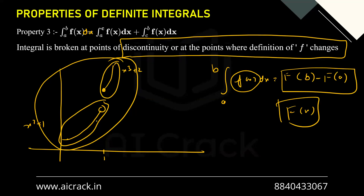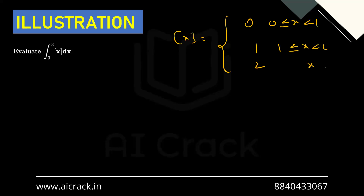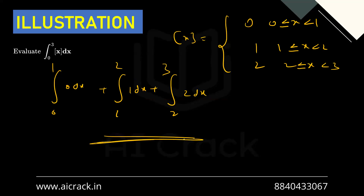Now let's solve this example: integral from 0 to 3 of [x] dx (greatest integer function). We know the GIF is discontinuous at integers, so for 0 to 3 the function values are 0, 1, and 2. For 0 ≤ x < 1, GIF = 0; for 1 ≤ x < 2, GIF = 1; for 2 ≤ x < 3, GIF = 2. We have defined three continuous parts. So we break the integral: integral from 0 to 1 of 0 dx, plus integral from 1 to 2 of 1 dx, plus integral from 2 to 3 of 2 dx. Now you can solve this — it's very simple.